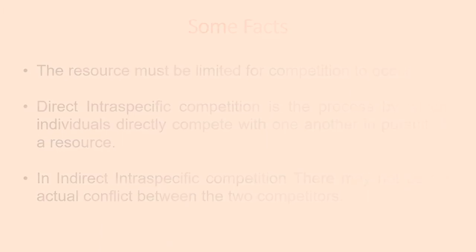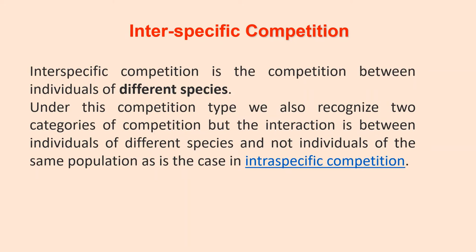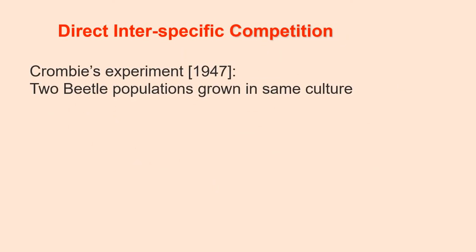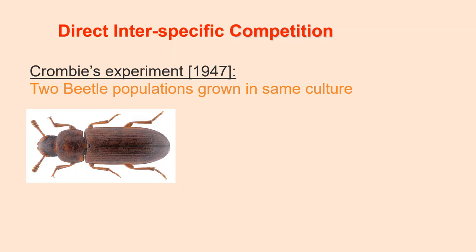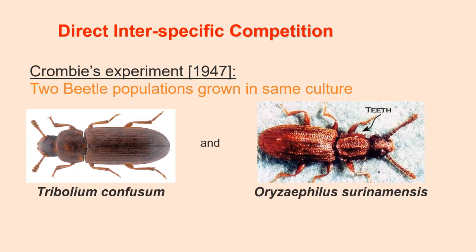Interspecific competition is competition between individuals of different species. We recognize two categories of interspecific competition — the interaction is between individuals of different species, not the same population as in intraspecific competition. Crompi worked in 1947 on two beetle populations, Tribolium confusum and Oryzaephilus surinamensis, in a culture medium of wheat flour used as food. It was observed that after some time, the Oryzaephilus population died out because in this competition, Tribolium ate more eggs of Oryzaephilus than vice versa.